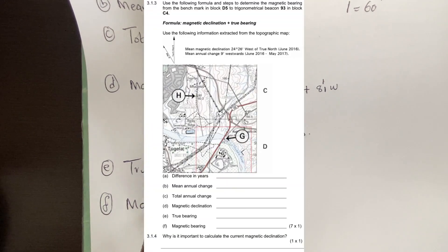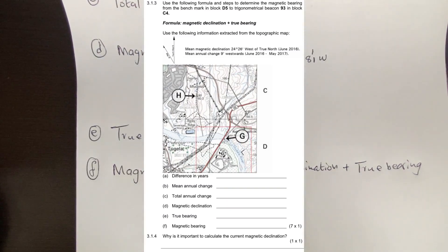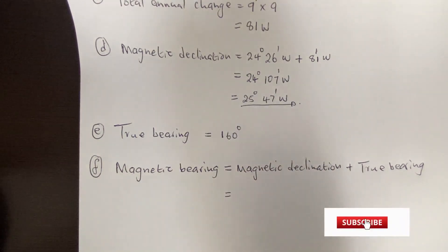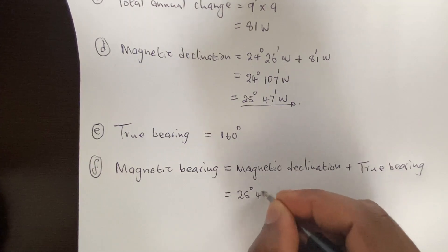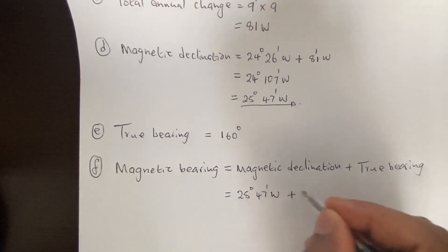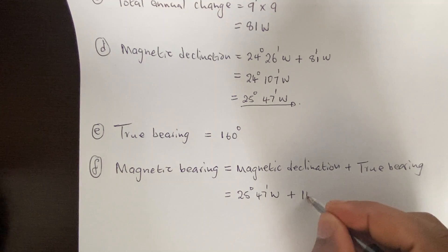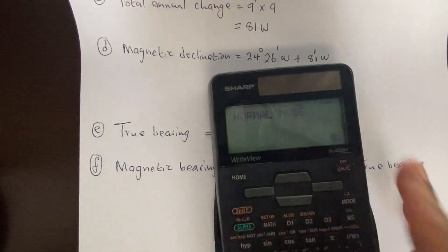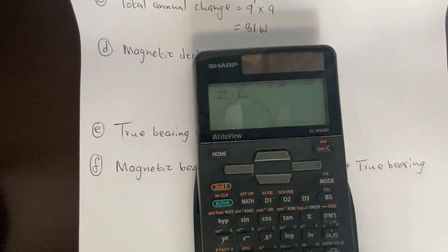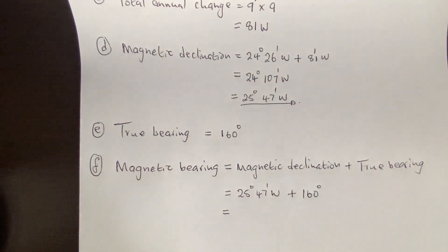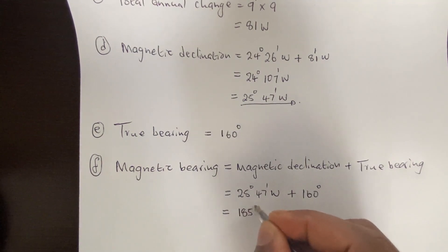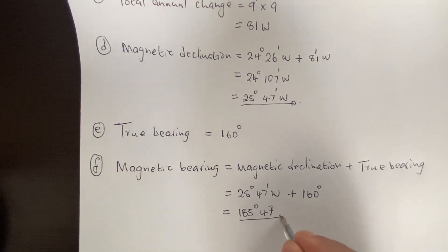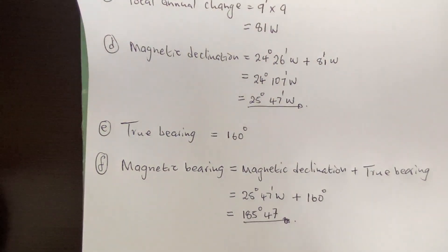Total magnetic bearing: using the given formula, we take our calculated magnetic declination of 25 degrees 47 minutes west and add the true bearing of 160 degrees. Adding the degrees: 25 plus 160 gives 185. So the total magnetic bearing is 185 degrees 47 minutes. No direction is needed for true or magnetic bearing.